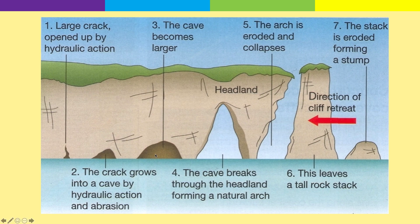As we go through it, the cave gets bigger. Step three: the cave becomes larger. Step four: eventually the cave breaks through the headland — you can see all the way through the area of land, eroded so much it has actually broken through. This forms what we call a natural arch, like an archway you can see all the way through. Step five: the arch is eroded and collapses — as the arch gets bigger and wider, the roof becomes too heavy and falls through, leaving the area where the arch was connected to the land.